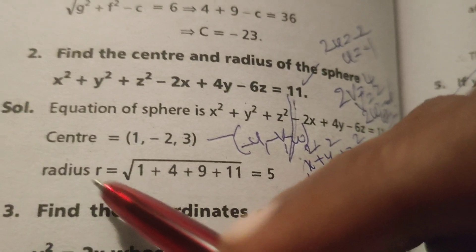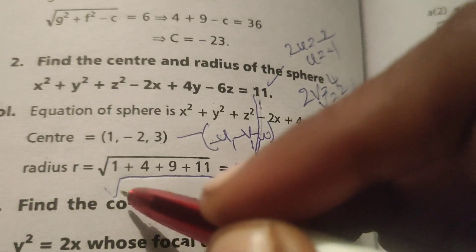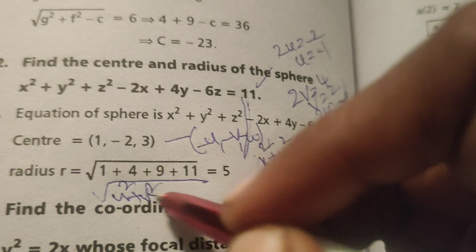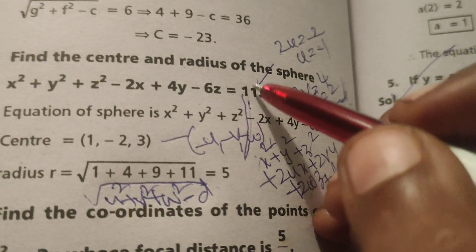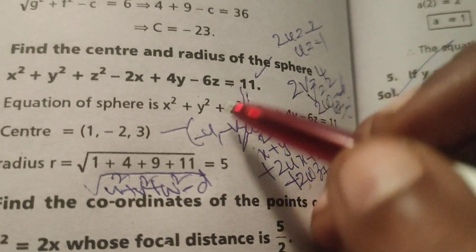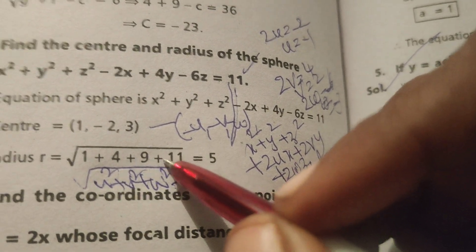Now find the radius r equals to formula, root of u square plus v square plus w square minus d. This can be written by LHS minus 11, so here formula minus, minus of minus plus 11.